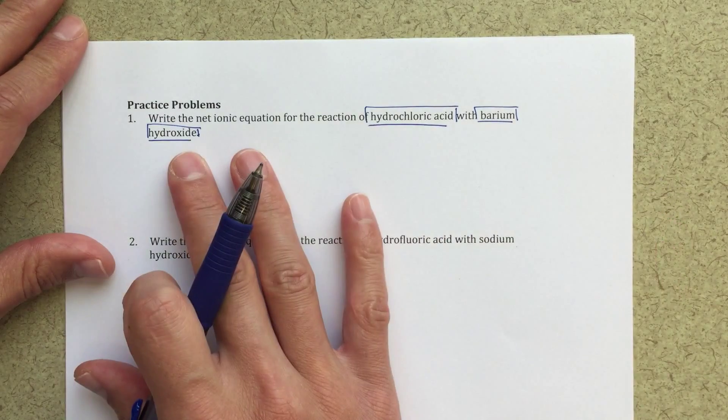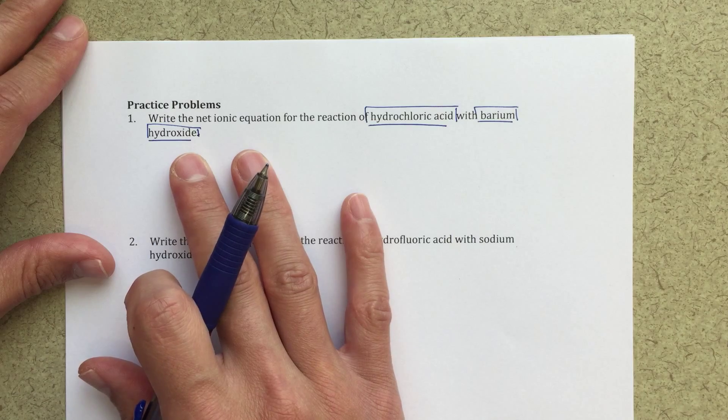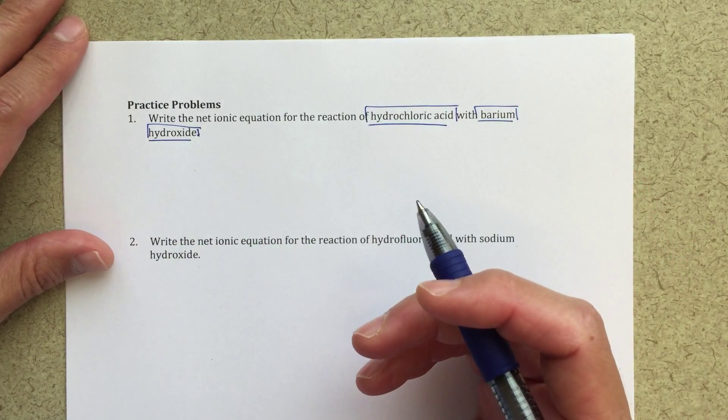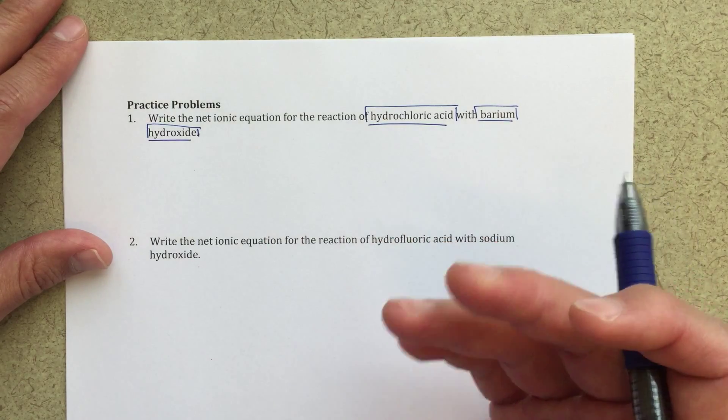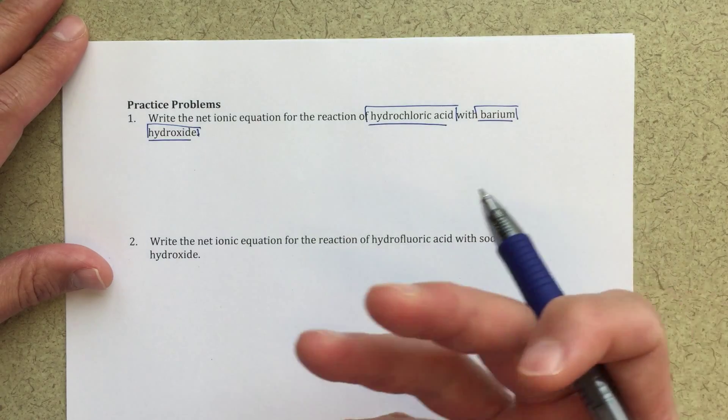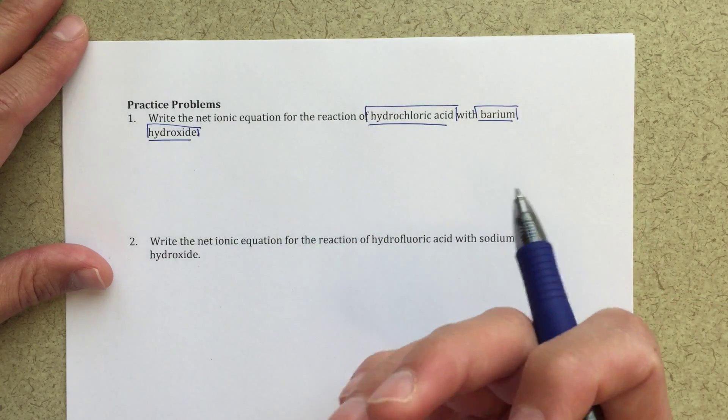Barium hydroxide, this is a strong base. Barium is a plus two ion when it's formed in an ionic compound. Hydroxide is OH minus, that's a polyatomic ion we should be becoming more familiar with.